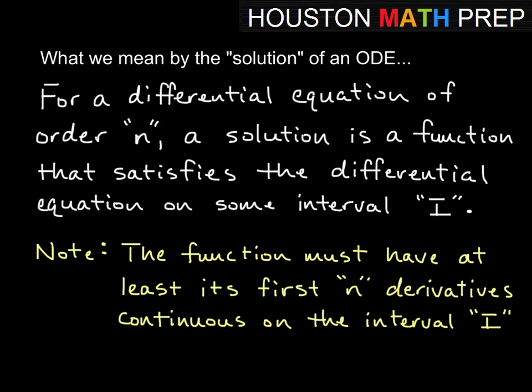If I have some y equals expression that's my solution on some interval I, we want to note that the function must have at least its first n derivatives continuous on the interval I. So if your interval is negative 1 to 1, and you had a fourth order differential equation, meaning the order n equals 4, then you need to be able to take four derivatives of your function and they need to be continuous on that interval.